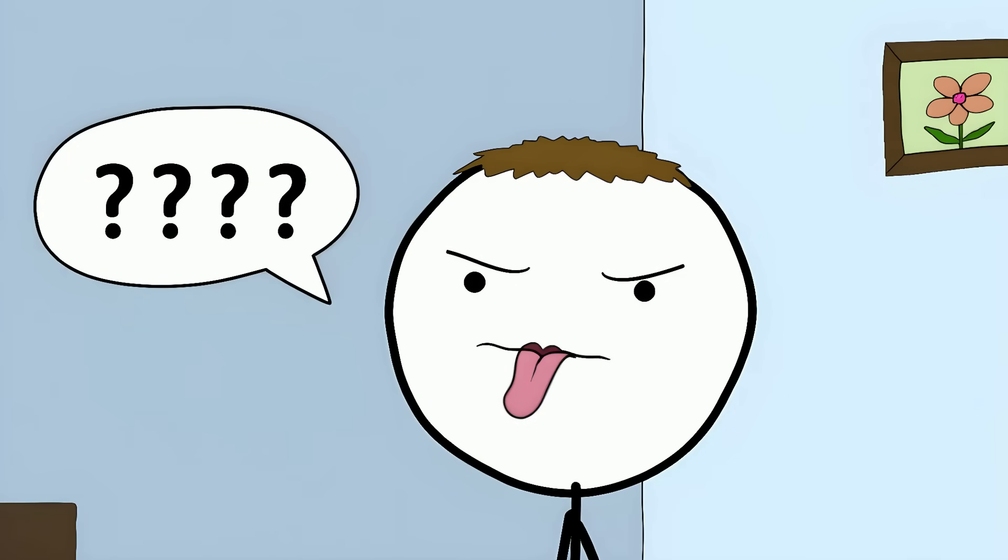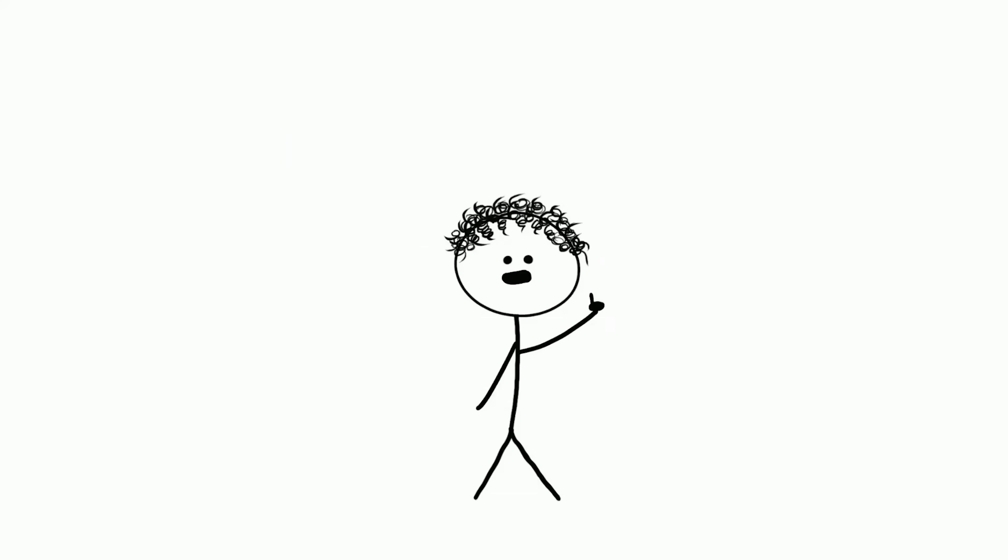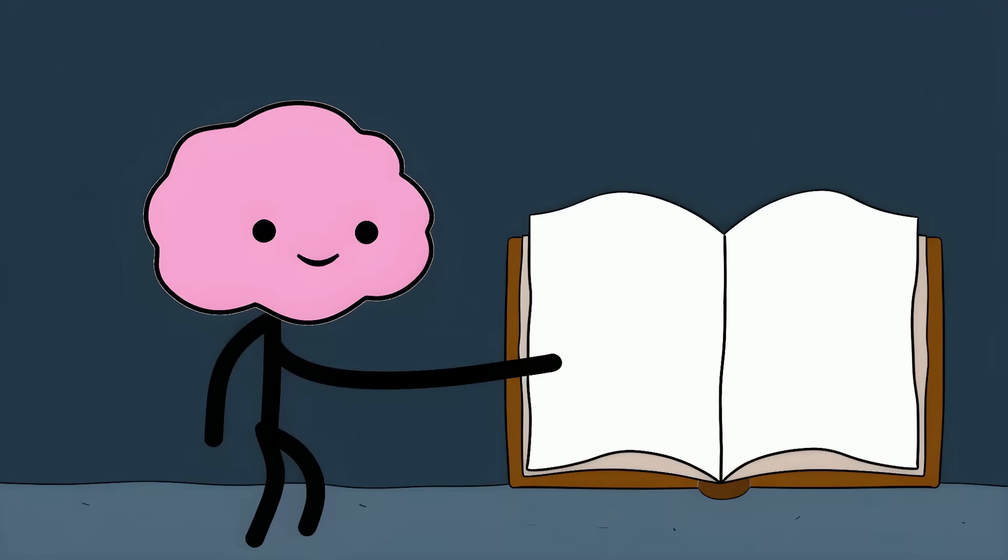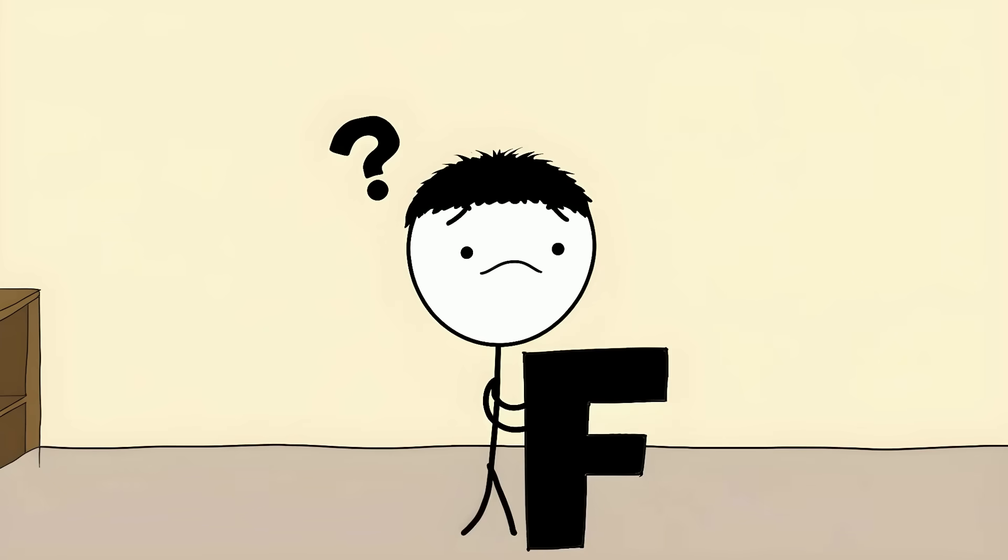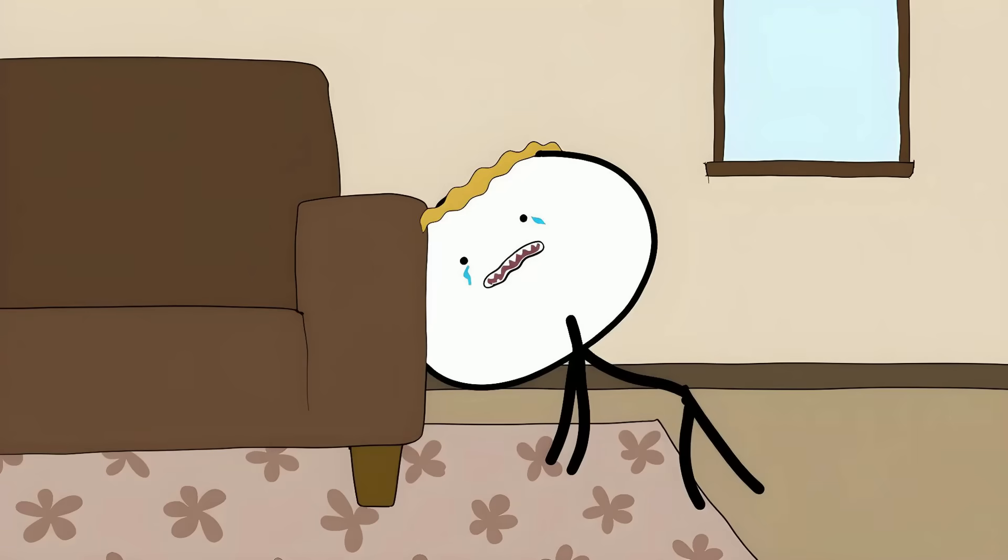Number 5: The Tip of the Tongue Phenomenon. Sometimes a word is right there, on the tip of your tongue, but you just can't grab it. Your brain knows the word exists. It knows the meaning. You might even know the first letter, how many syllables it has, or words that sound similar. But the actual word stays hidden, like a remote behind the couch.